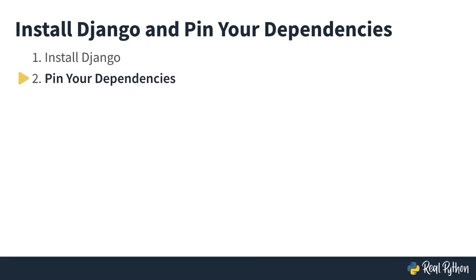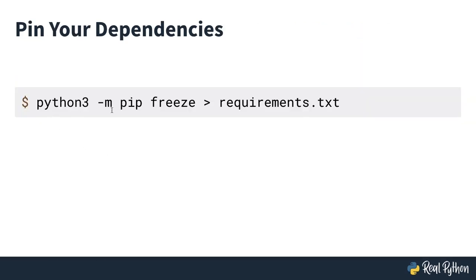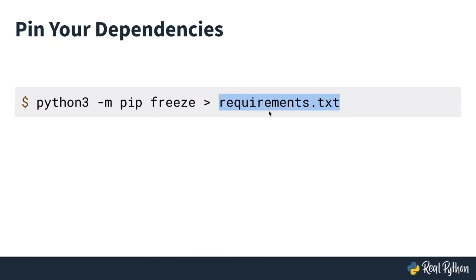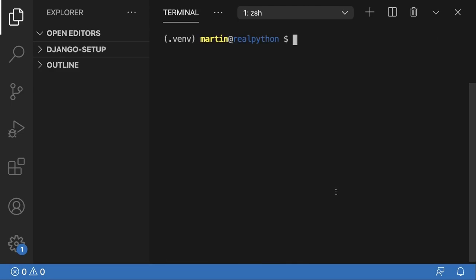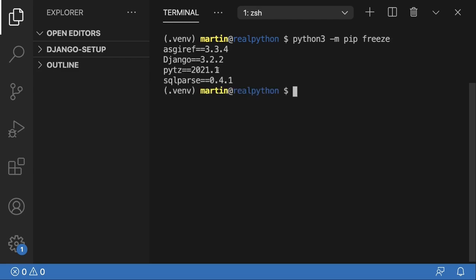After successfully installing Django, you will now learn how to pin your dependencies to make sure anyone using your project in the future knows what version of Django you were working with. The command for this is `python3 -m pip freeze`, and then you pipe the output into a new file called `requirements.txt`. This is a standard naming convention for where you keep track of your requirements for a Python project. Running `python3 -m pip freeze` tells you which packages are currently installed — for example, Django==3.2.2 at the time of recording.